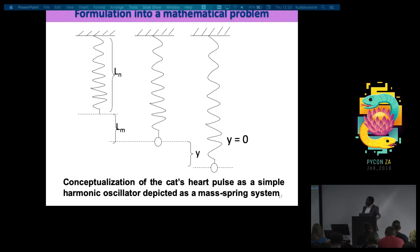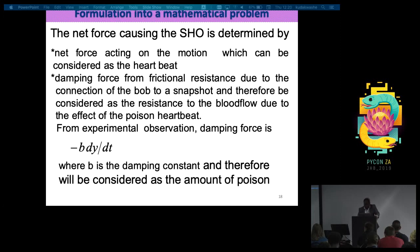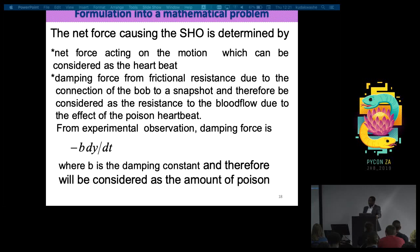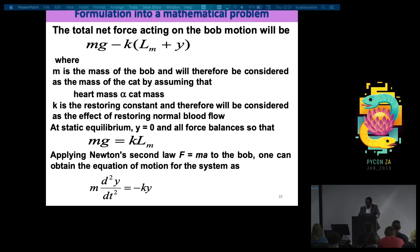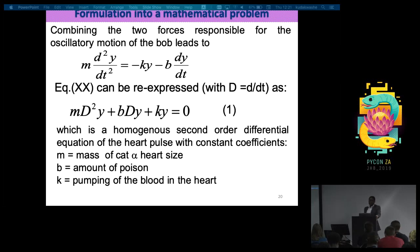In physics, when you have a complicated problem you cannot solve, you look for a simpler problem to represent it. If that simpler model gives good results, you accept it as a model. Simple harmonic motion is of great importance in physics because most complicated problems can be modeled as simple harmonic motion. So we are saying the cat's heart can be conceptualized as simple harmonic motion — specifically, the simple mass-spring system. When you have a spring and release it, it oscillates up and down in a to-and-fro movement, like the pulse of the heart.